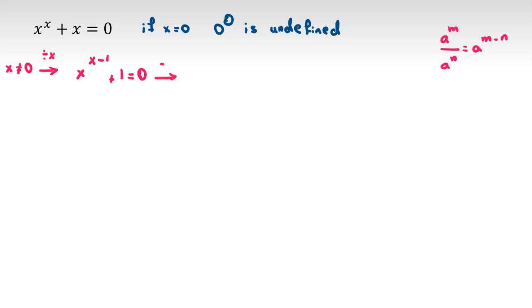Now we conclude, we subtract 1 from both sides. And x to the x minus 1 equal to negative 1. So we want to analyze when a to the power of b is negative 1.